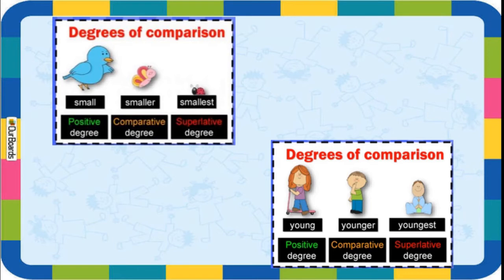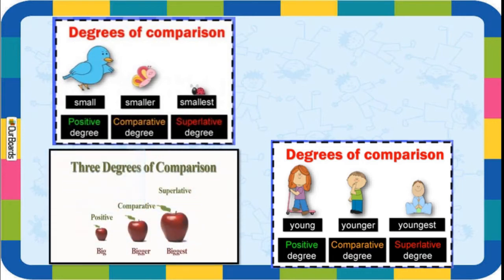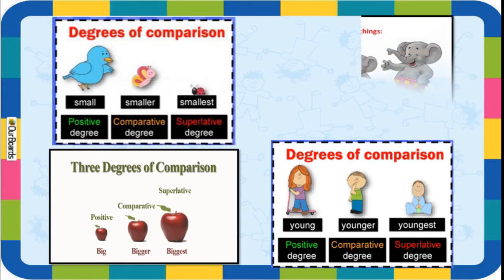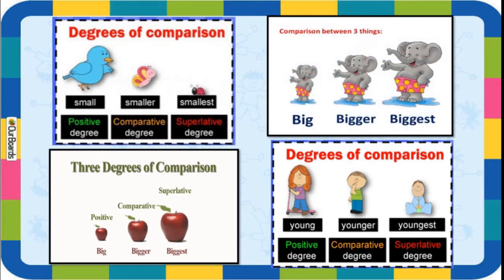Here: young - younger - youngest, showing positive, comparative, superlative. See their ages. Next, see the sizes of apples: big - bigger - biggest. And see the size of the elephant: big - bigger than - biggest.